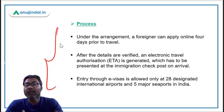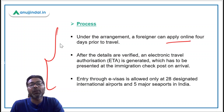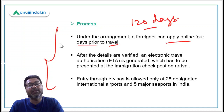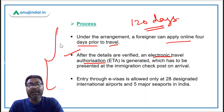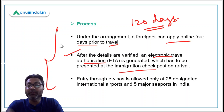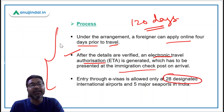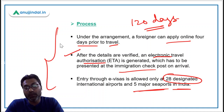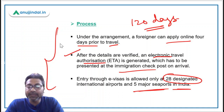A foreigner can apply online for this e-visa four days prior to travel. The maximum validity granted is 120 days. After verification of details, an electronic travel authorization is generated, which must be presented at the immigration check post on arrival. Entry through e-visa is allowed only at 28 designated international airports and five major seaports within the country.